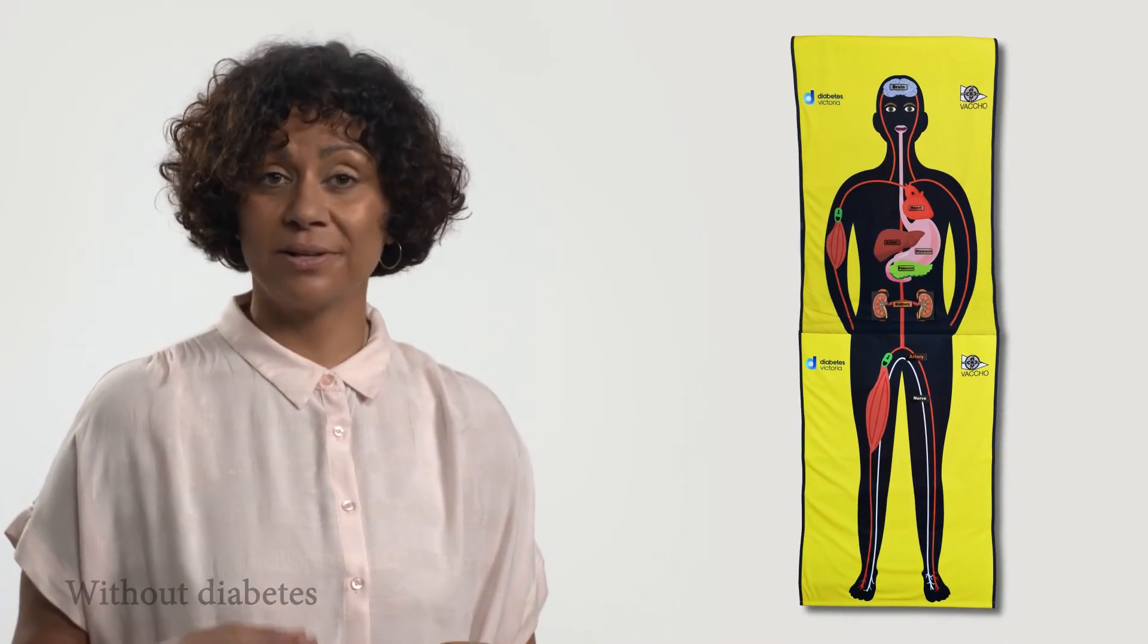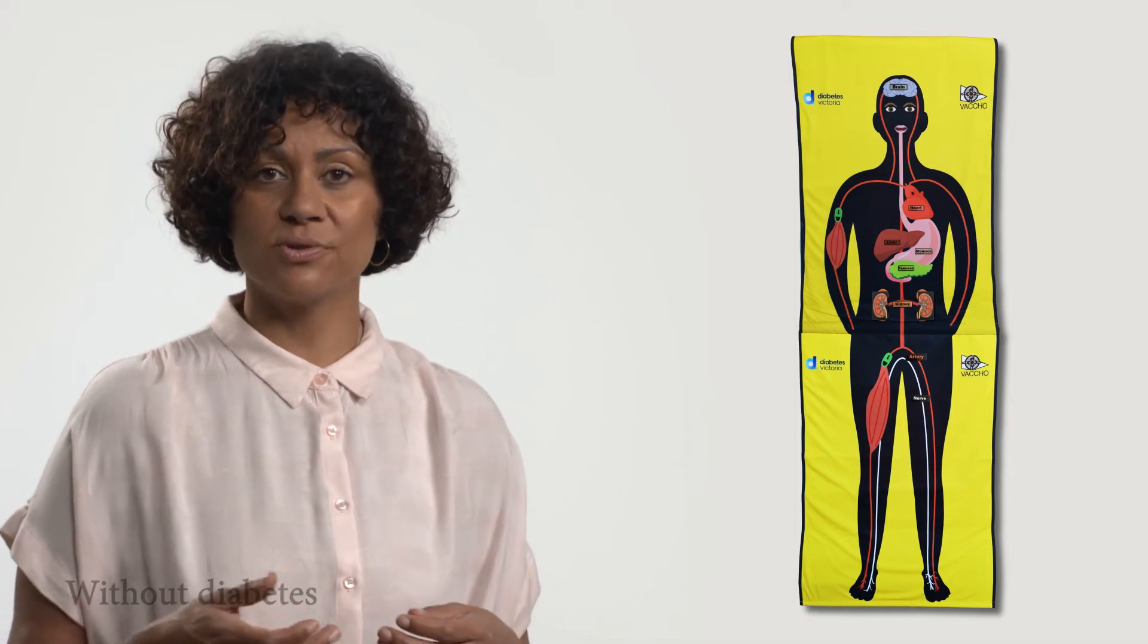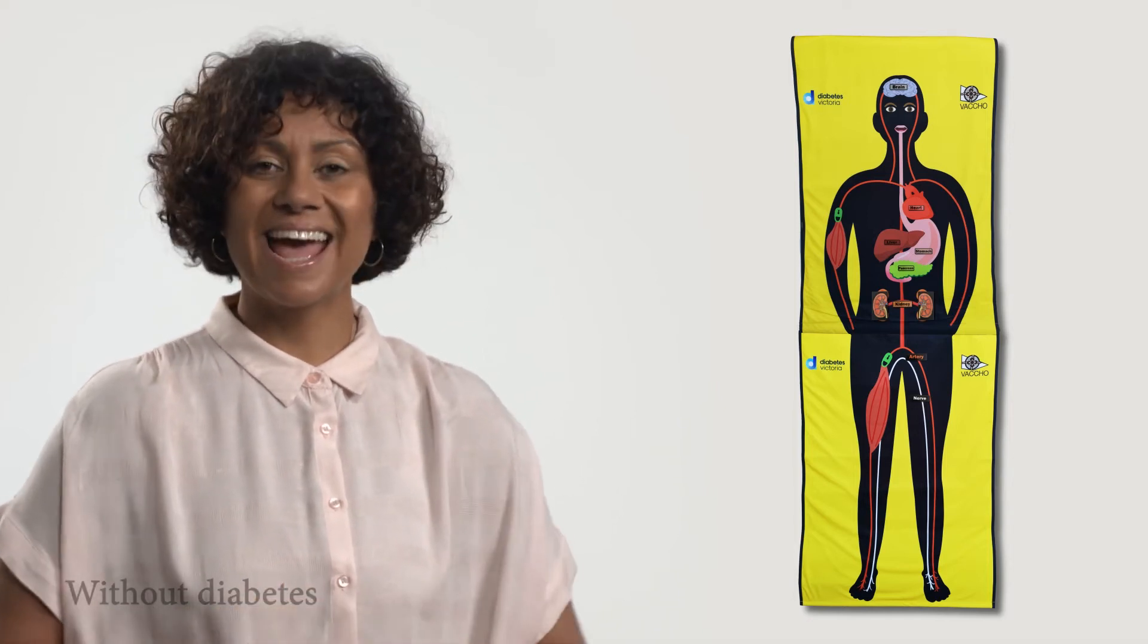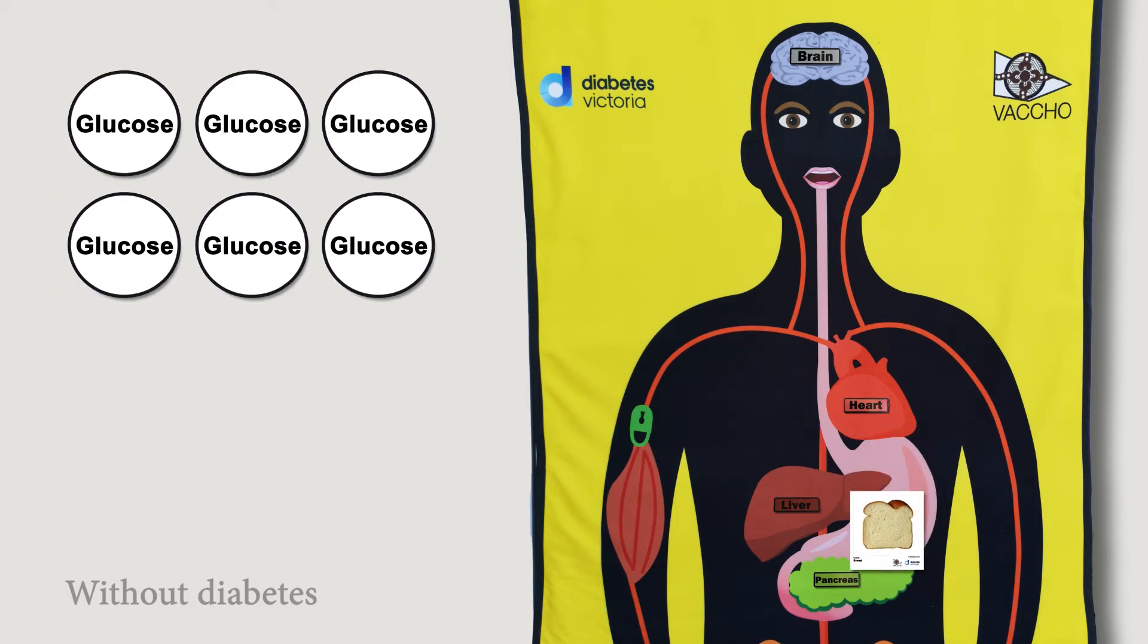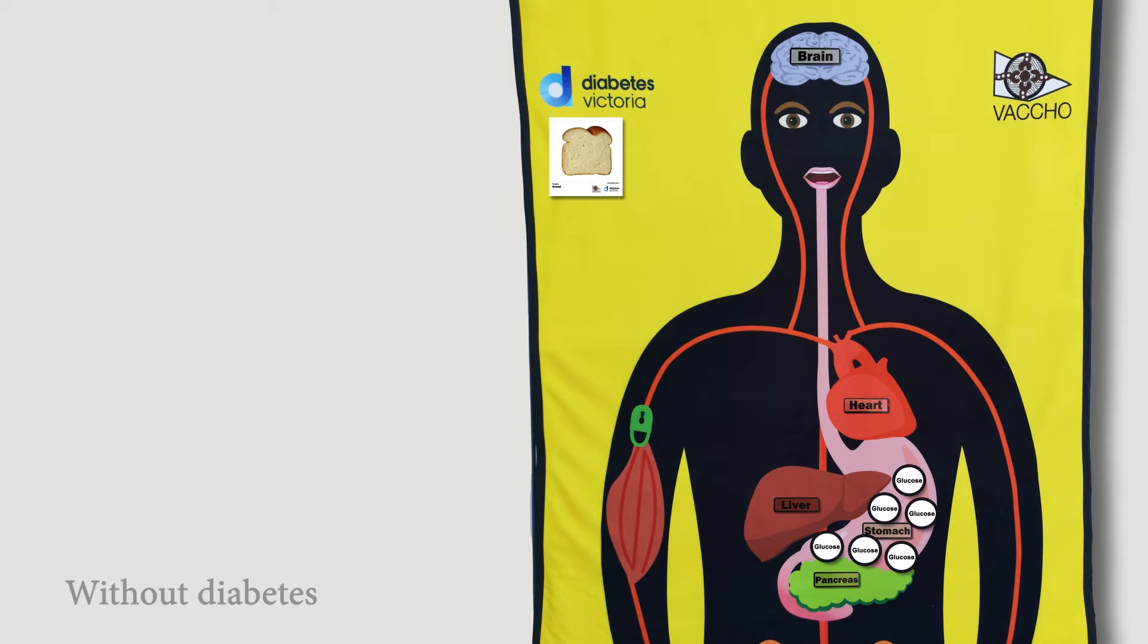Now let's use Feltman to show how carbohydrate food is digested and used in the body. When we eat carbohydrate food like bread in a sandwich it goes into the stomach and intestine where it is broken down into glucose. You can use the glucose discs to show this.